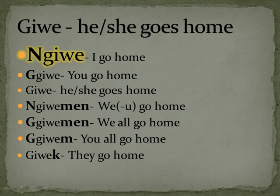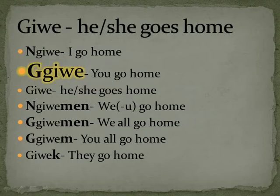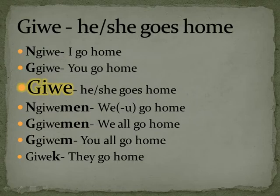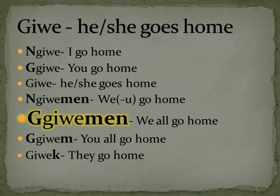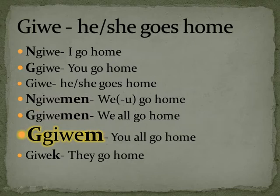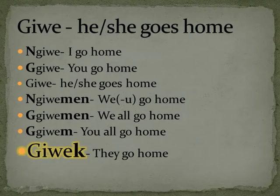Giwe is the verb to go home. Nagiwe — I go home. Gagiwe — you go home. Giwe — he or she goes home; you could also put a wek at the end or a W at the front for wgiwe, or giwe-wek. Nagiwemen — we but not you go home. Gagiwemen — we all go home, or just giwemen. Gagiwem — you all go home. Giwek — they go home.